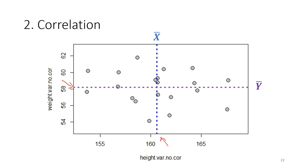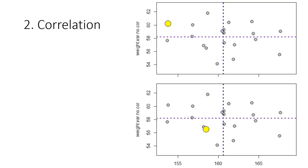After calculating the means, we can calculate the covariance. We focus on two points at a time and see how far the point values vary from the mean. The covariance is like variance — it is a measurement of how far a given value is from the mean — but now we consider both variables simultaneously.